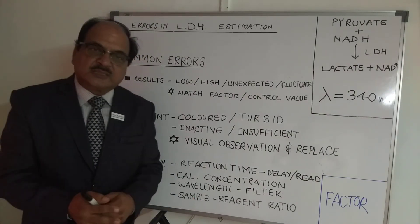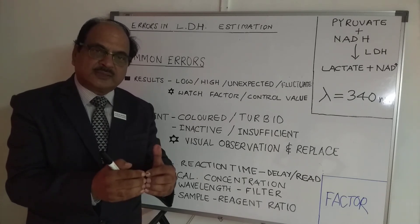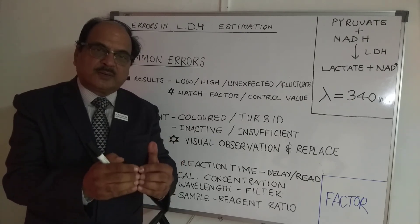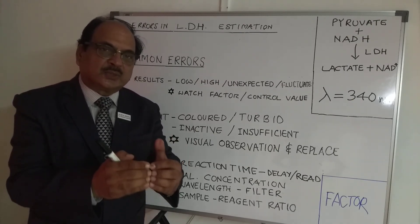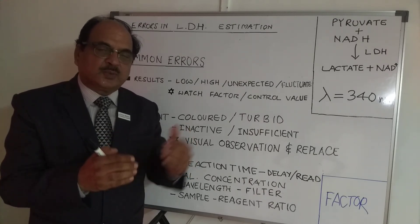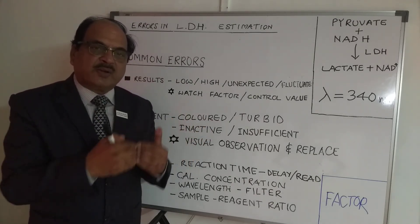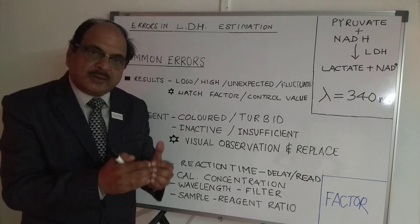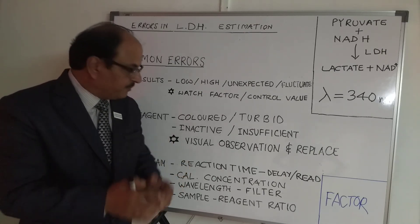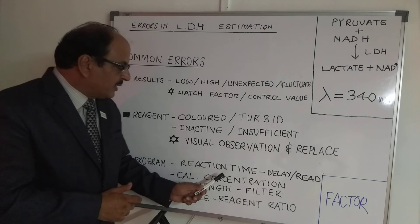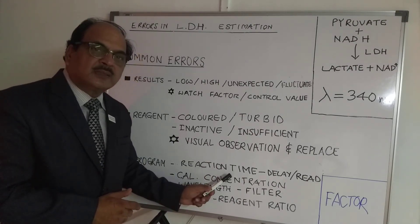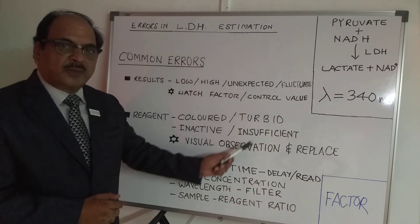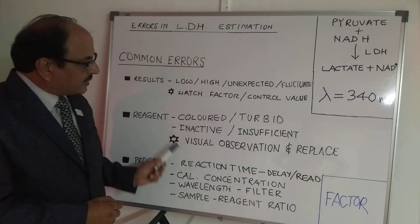Sample-to-reagent ratio is mentioned in the technical insert. For 1 mL reagent, the recommended sample volume is typically around 20 microliters. If needed, you may halve both volumes — 0.5 mL reagent and half the recommended sample volume — and results will still be acceptable. Importantly, whatever sample-to-reagent ratio is used for the calibrator must be the same for the sample.